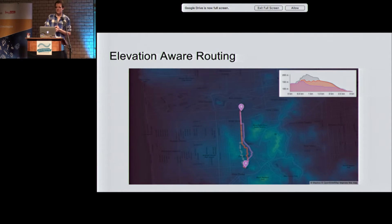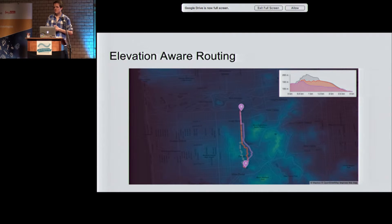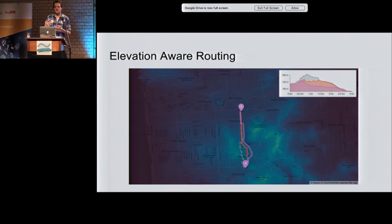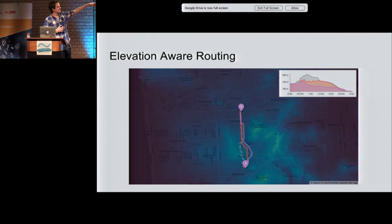OSRM can also do elevation-aware routing. You can put in custom elevation data — or use SRTM data since it's open source — and then optimize your route with respect to elevation. For example, in San Francisco you don't want to route over hills, so you can minimize elevation gain and get the best route. The elevation profiles are shown at the top.